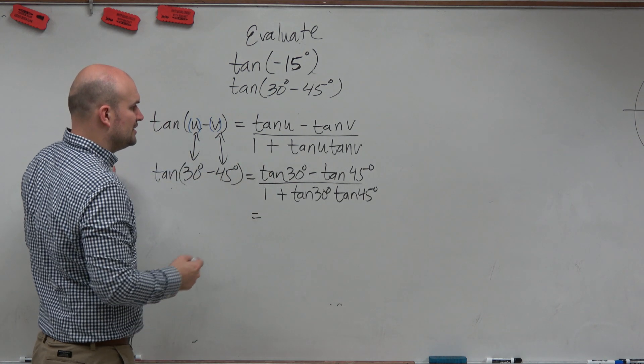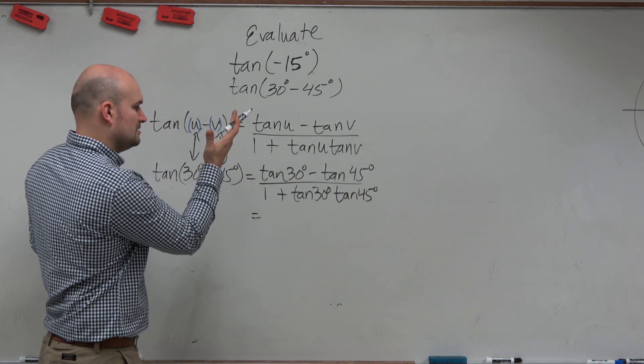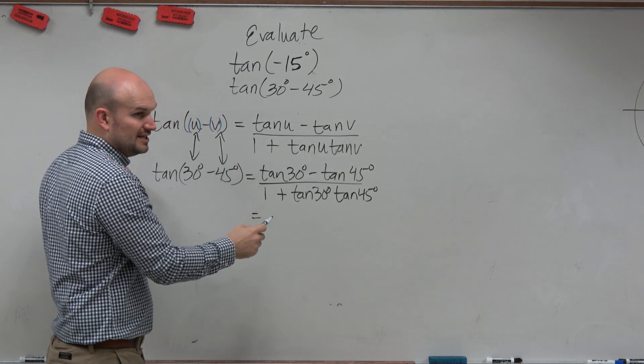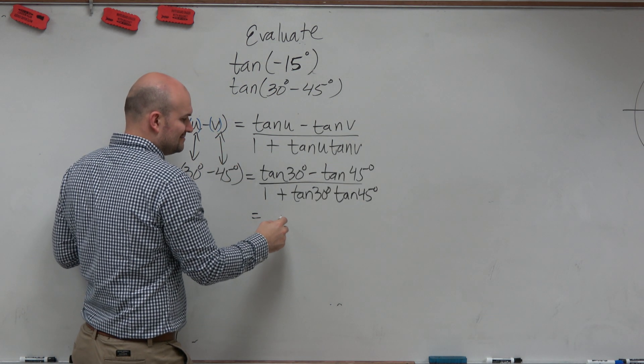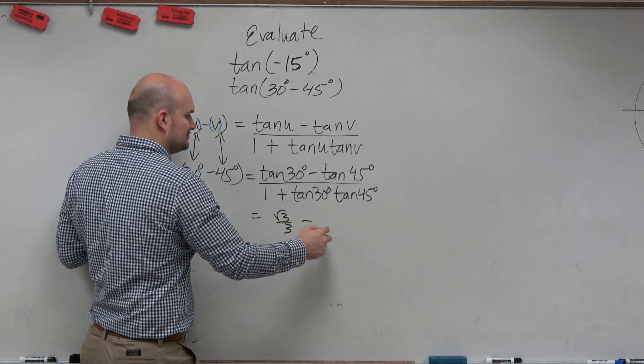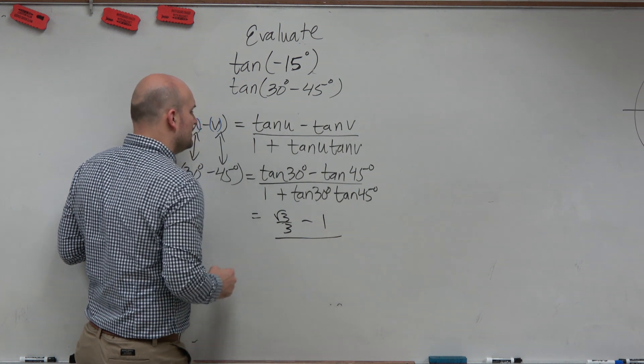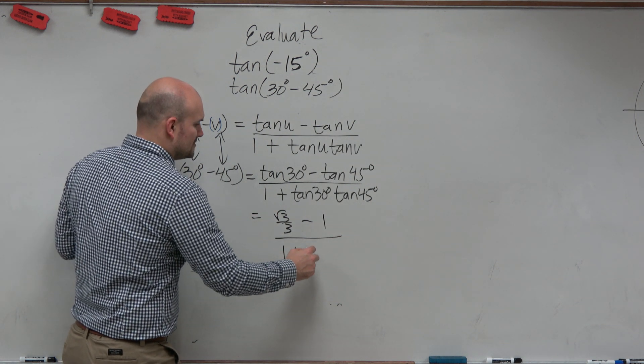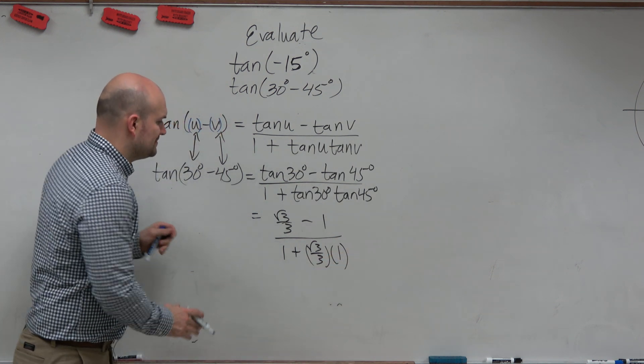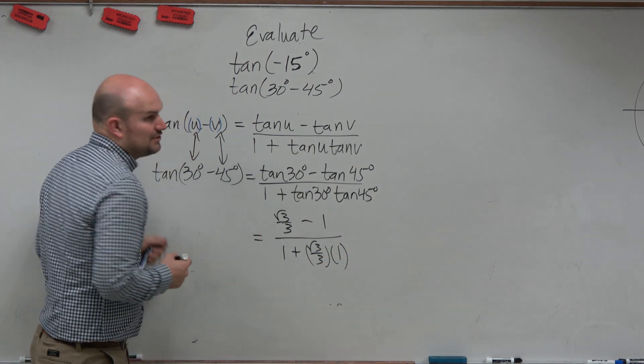So tangent of 30 degrees, I think about 33s. Pi over 6. Yeah, which is pi over 6. So therefore, the tangent is? Blink your eye. You got it? Square root of 3 over 3. Square root of 3 over 3. Tangent of 45 degrees? 1. Good job. 1 plus square root of 3 over 3 times 1. OK. So there's your answer.